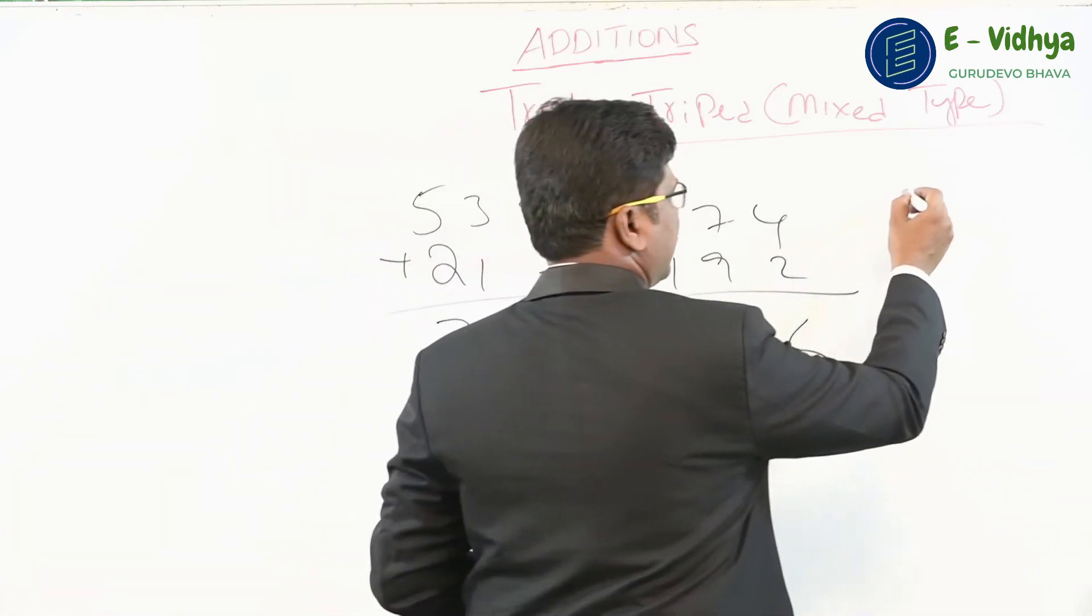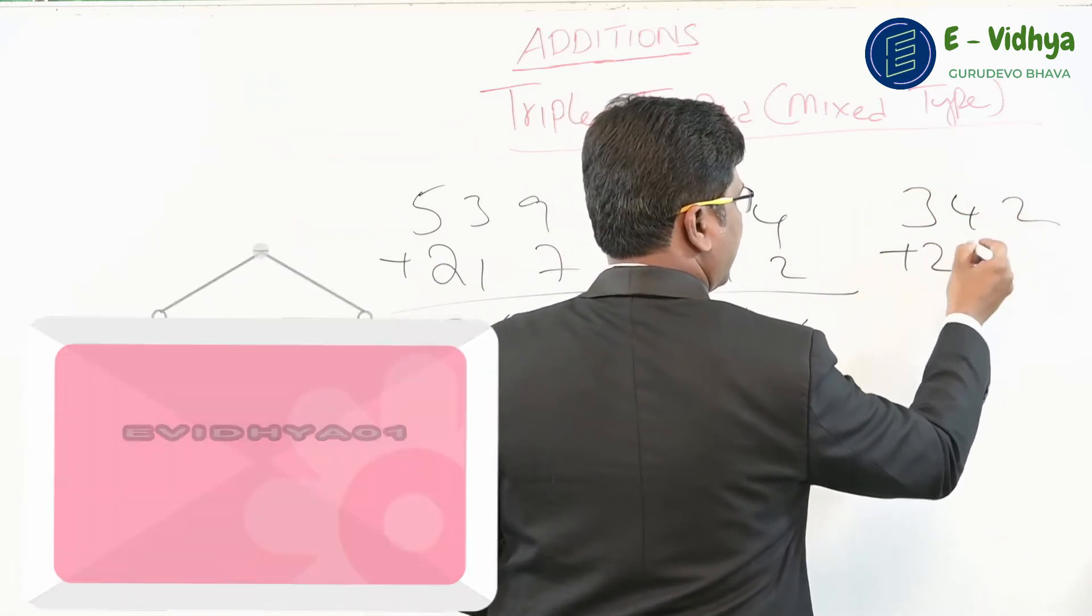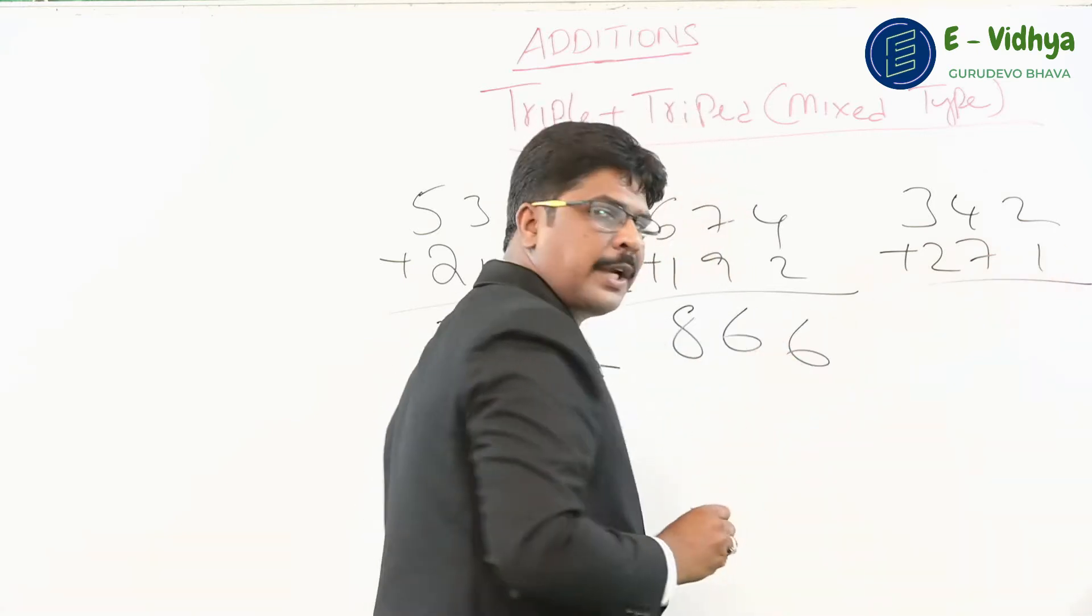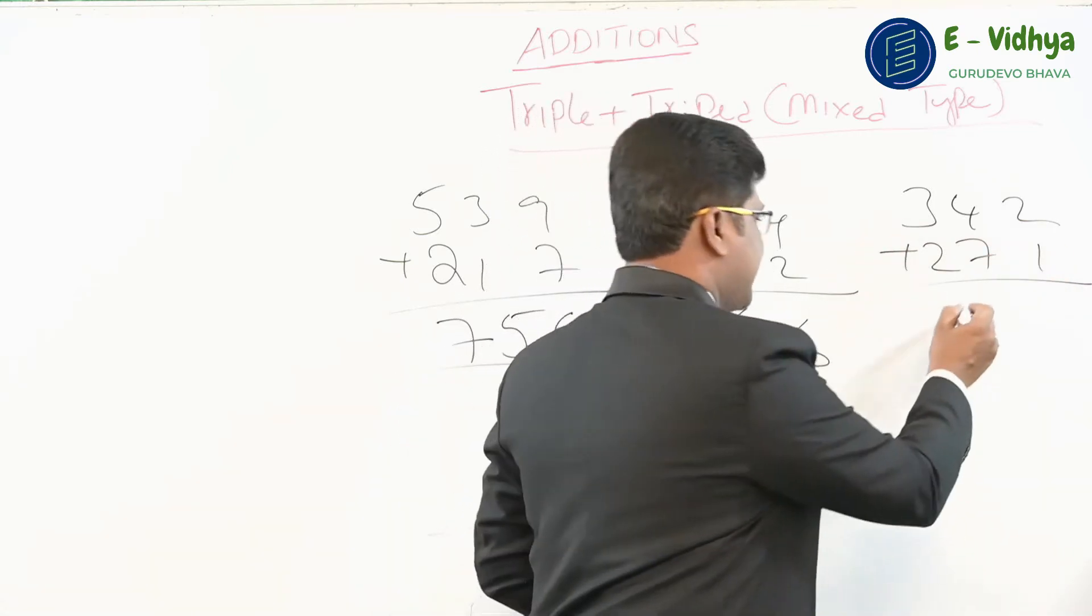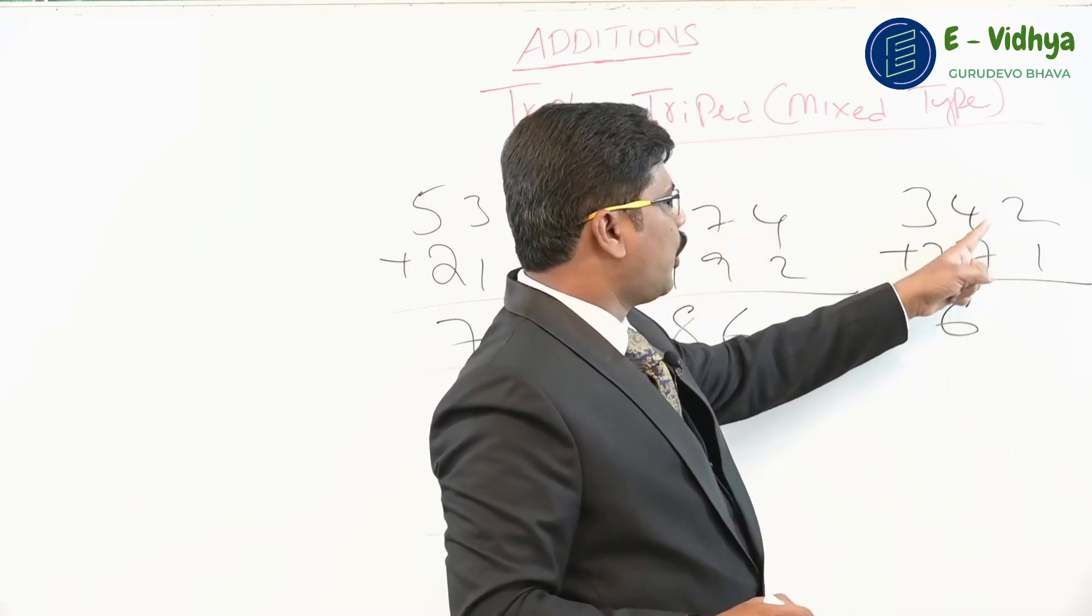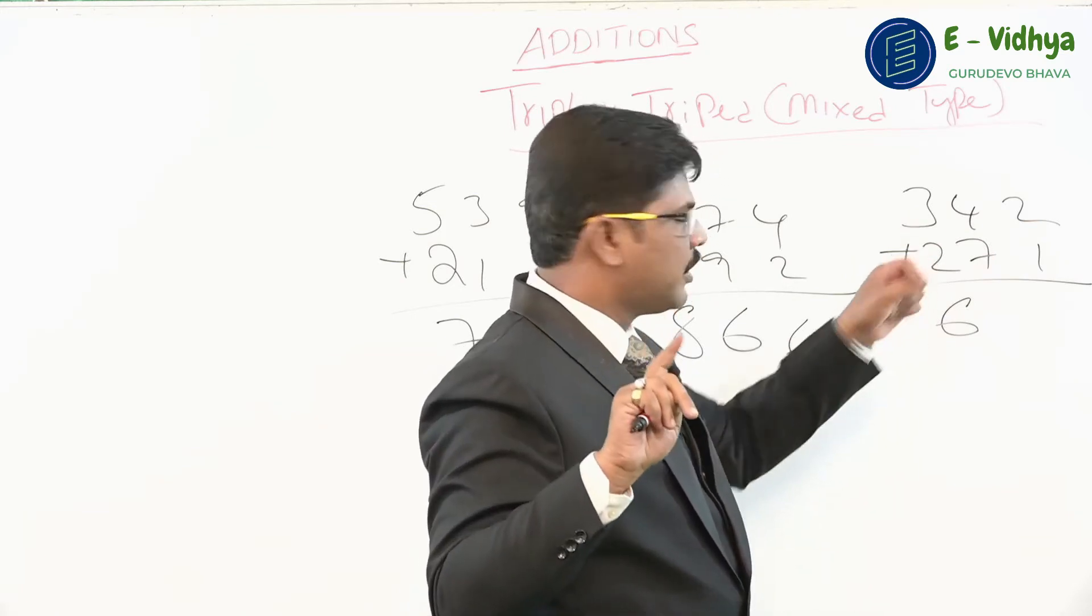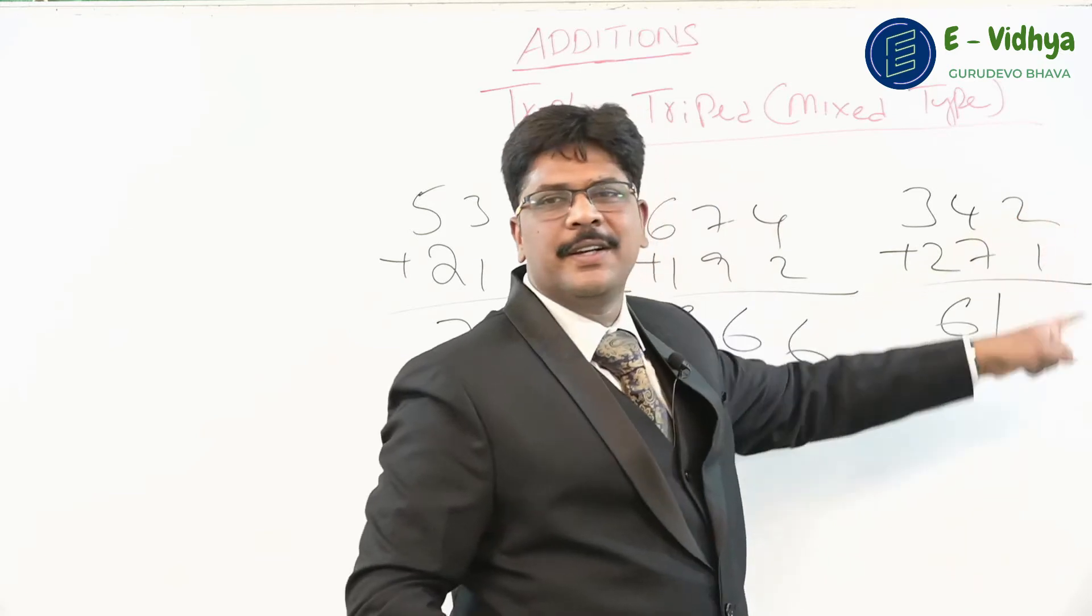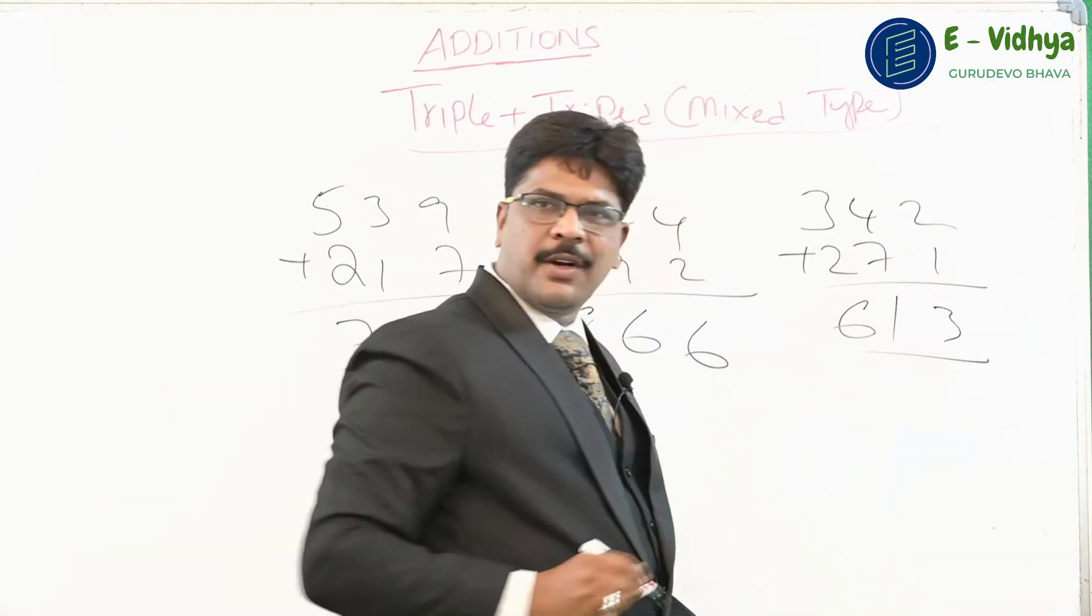Let's take one more example: 342 added to 271. Add 3 plus 2 equals 5. Is it 5 or 6? It's 6 because the next place is a carry. Now think of the number 4 and 7, you get 1. Is it 1 or 2? It's 1 only because next place is a non-carry. Now just add 2 plus 1, you get 3.